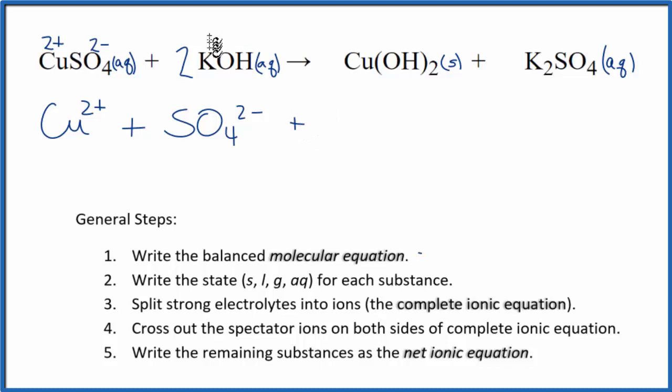Then potassium group 1, 1 plus, the hydroxide, always 1 minus. So I have two potassium ions, two of the K plus ions, plus two of the hydroxide ions, 2 OH minus. Those are the reactants.